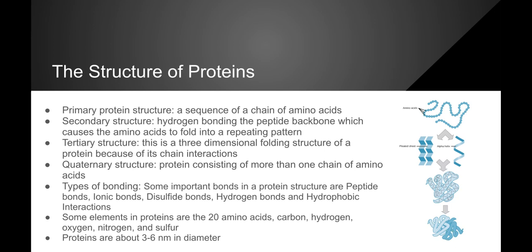The types of bonding in protein structure include peptide bonds, ionic bonds, disulfide bonds, hydrogen bonds, and hydrophobic interactions. Some elements found in proteins include the 20 amino acids, carbon, hydrogen, oxygen, nitrogen, and sulfur.